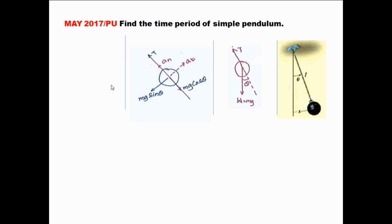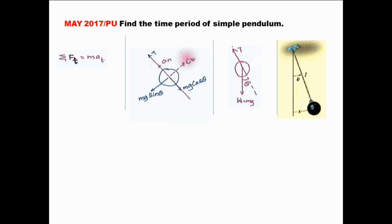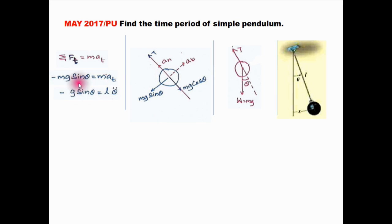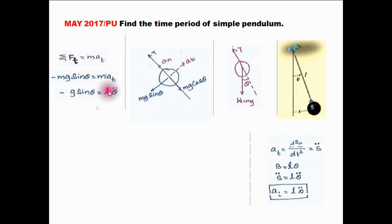Here I am going to apply Newton's second law, also known as the equilibrium method or D'Alembert's method. Applying Newton's second law along the direction of At, and the ball is moving right up, the restoring force is minus Mg sin theta equal to M·At. Cancelling M on both sides, we get minus g sin theta equals At, which is d²s/dt², written as s double dot.